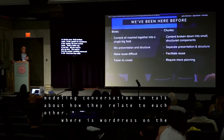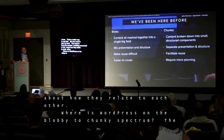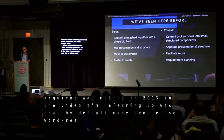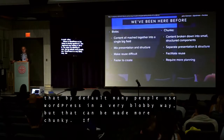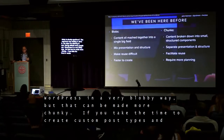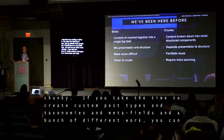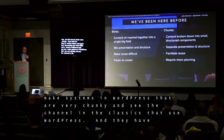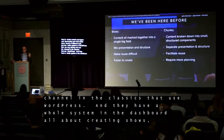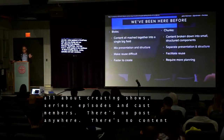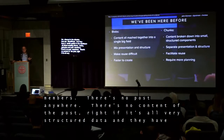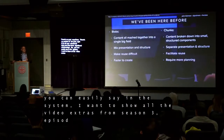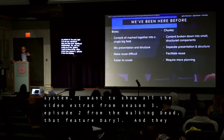So where is WordPress on the blobby-to-chunky spectrum? The argument I made back in 2013 was that by default many people use WordPress in a very blobby way, but it can be made more chunky. If you take the time to create custom post types, custom taxonomies, post meta fields, you can make very chunky systems. AMC, the channel formerly known as American Movie Classics, uses WordPress and has a whole system for creating shows, series, episodes, and cast members — no concept of a post. Very structured data with significant relationships.